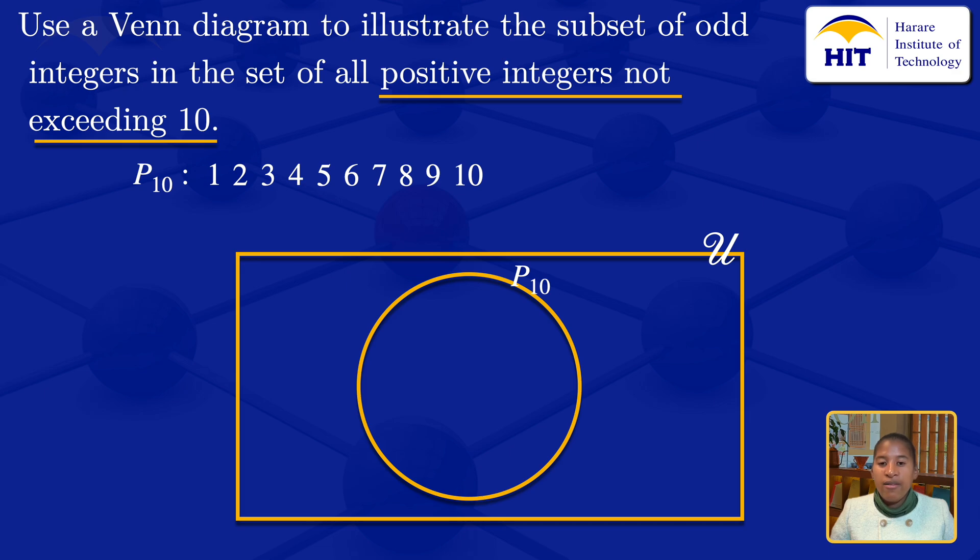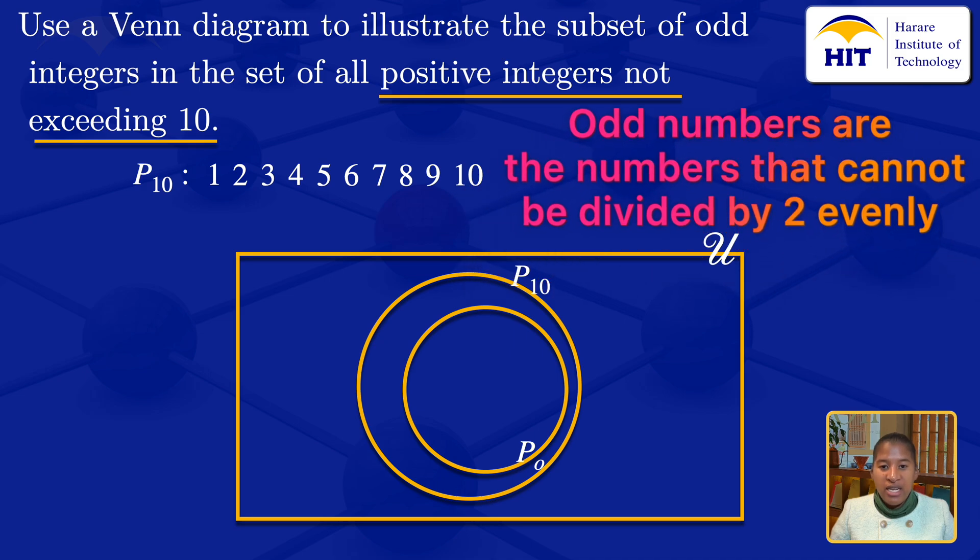I will denote this oval by P10. Inside this oval, we have another circle, which I will denote by P0. P0 is the set of odd integers. Odd numbers are numbers that cannot be divided by two evenly. These are 1, 3, 5, 7, and 9.